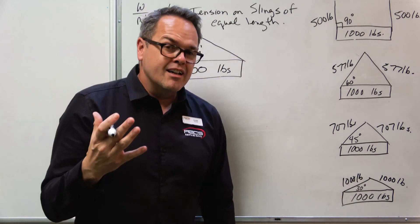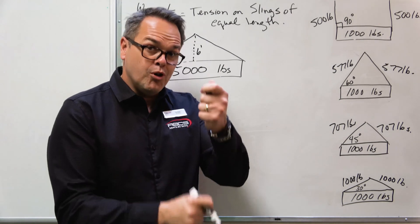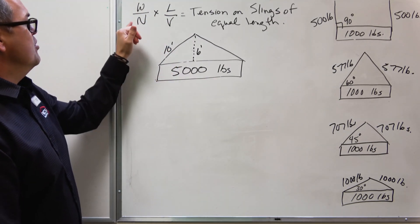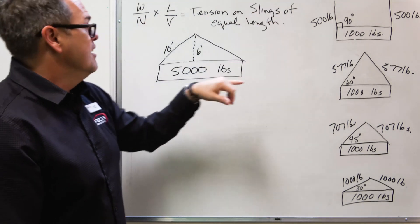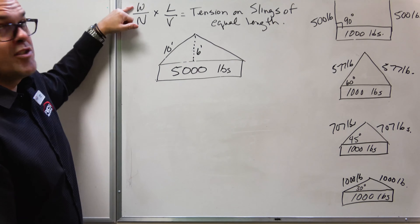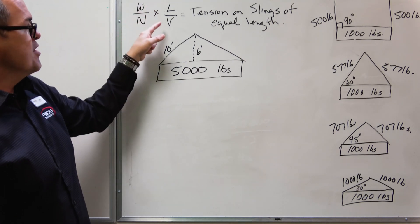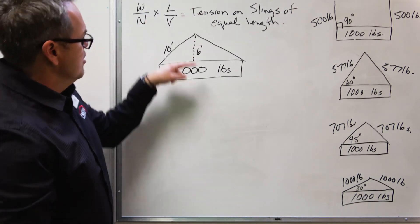Now, there is a formula that you can work out or use to work out how much force or straight pull tension you're putting on each sling. The formula is W/N times L over V, and that's going to give you the tension on each sling of equal length. W is the weight of the load over the number of slings you're using, times the length of the slings over the vertical. And that vertical is from the hook down to the load.